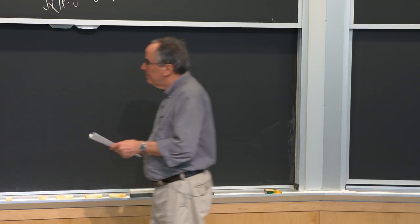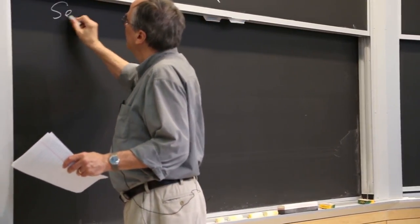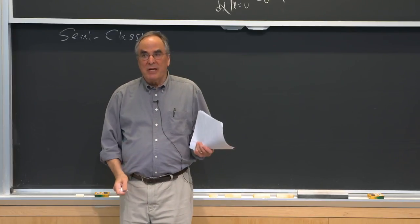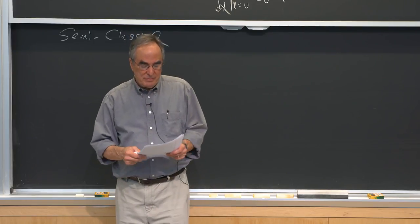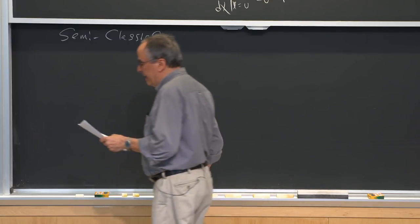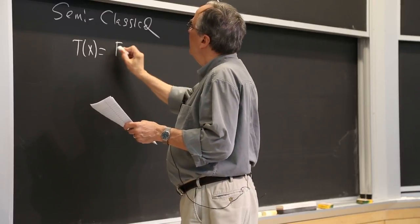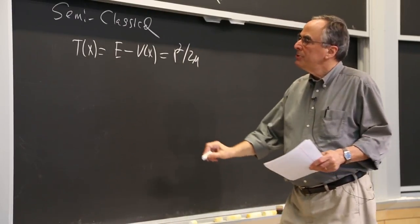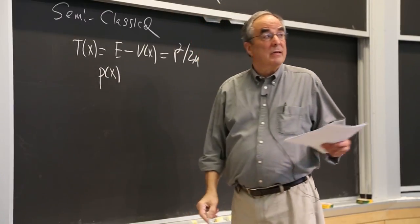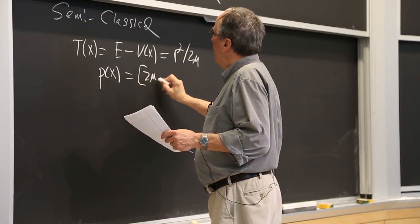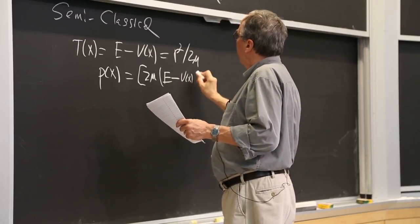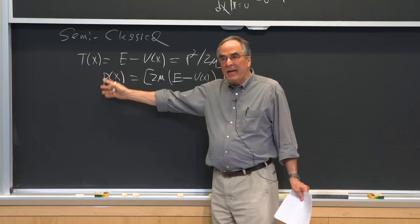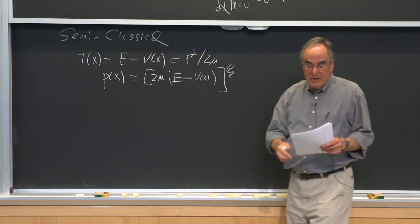Now we're back to my favorite topic — semi-classical. It's really easy to understand and use in many problems. In classical mechanics, the kinetic energy is E − V(x) = p²/2μ. So we can derive an equation for p(x) classically: p(x) = √[2μ(E − V(x))]. This is an extremely useful function — it's not an operator, but it's a thing we're going to use to make sense of everything.